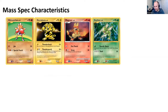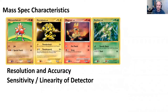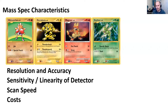Before we dive more into the other types of analyzers, I want to quickly mention that there are different mass spec types — like a Pokémon card deck, they all have a little bit different properties and different costs. You kind of have to choose wisely when you buy one, and also when you plan your experiment depending on what instruments your lab or collaboration partners have available.